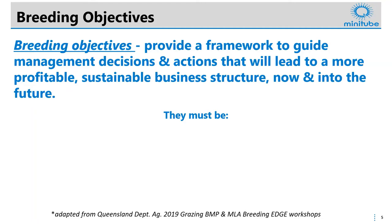When setting breeding objectives, there are a couple of things to think about. Firstly, they must be recorded — you need to have them written down somewhere, which gives them tangibility. They need to be specific, so they can't be too broad that you can't measure them or compare them to your results. They also need to be measurable, meaning they have parameters in place so you can say yes, we've achieved those, or no, we haven't — and determine how to get there.